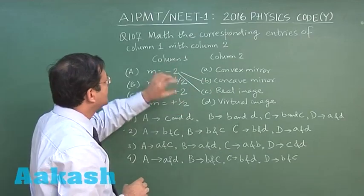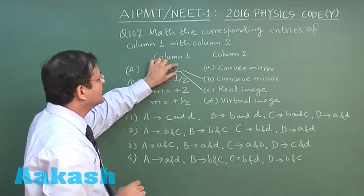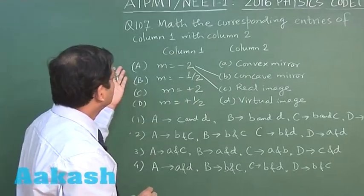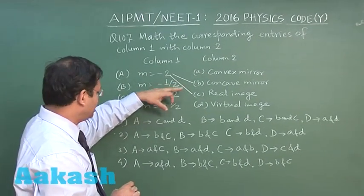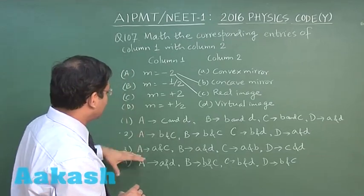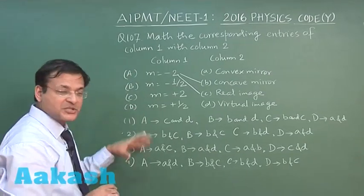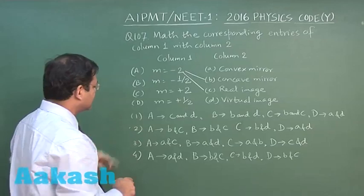The column 1 entry A is matching with entry B and C. You can check in these options that it is only the second option that is marking like that.